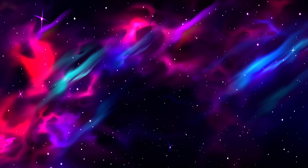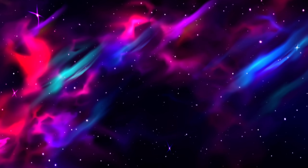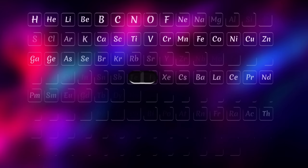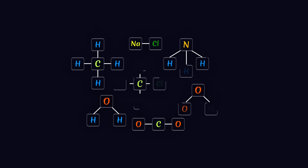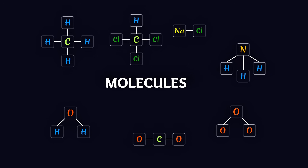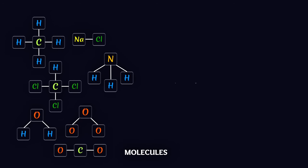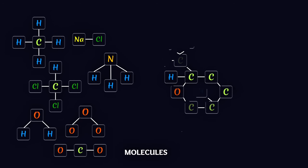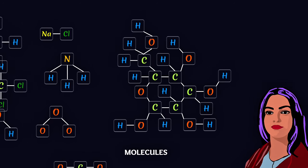Every matter in this universe is a combination of just 118 elements or atoms. But these 118 elements can bond and arrange in enormous numbers of ways, which we call molecules. With only 118 types of building blocks, we can create everything from complex molecules to a universe.